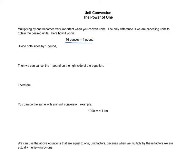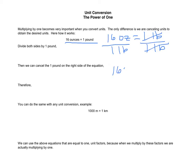Here we have 16 ounces equals 1 pound. If we divide both sides by 1 pound, we can cancel the 1 pound on the right side of the equation, and that leaves us with 16 ounces divided by 1 pound equals 1.